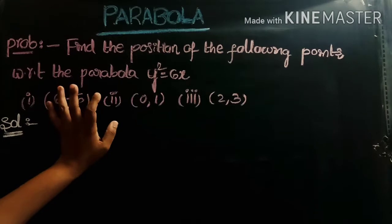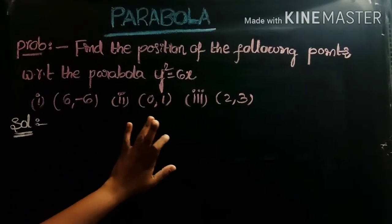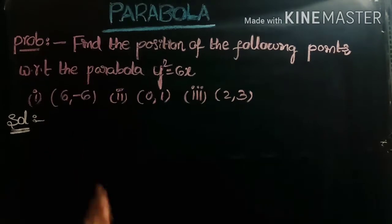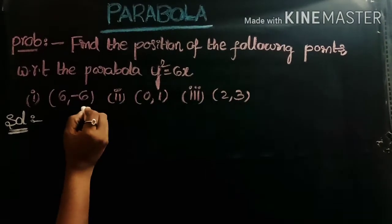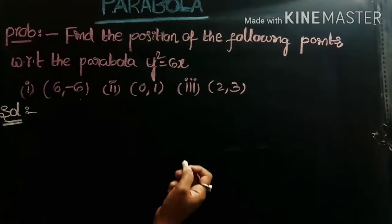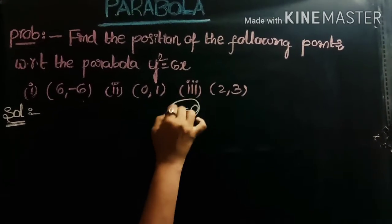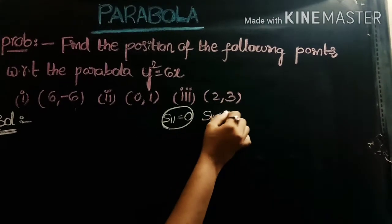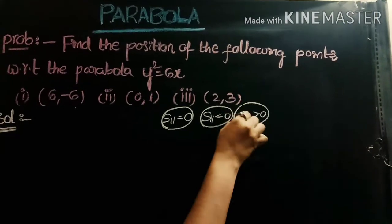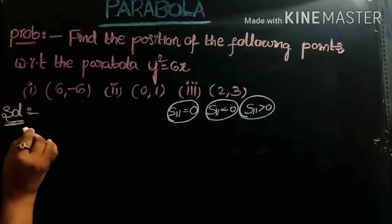First problem: find the position of the following points with respect to the parabola y² = 6x. The given points are (6, -6), (0, 1), and (2, 3). We want to determine whether each point lies on, inside, or outside the parabola. The conditions are: if S₁₁ = 0 the point lies on the parabola, if S₁₁ < 0 it lies inside, and if S₁₁ > 0 it lies outside.